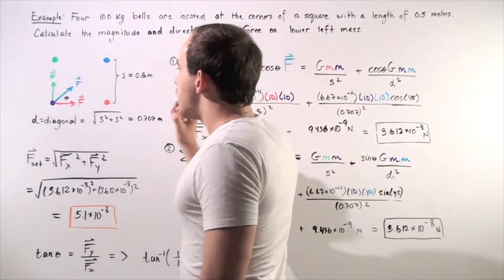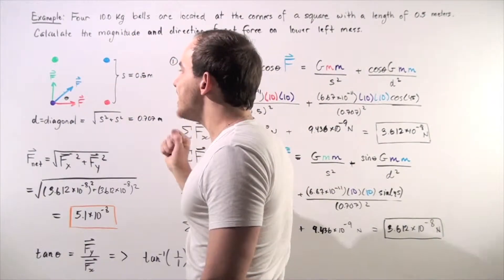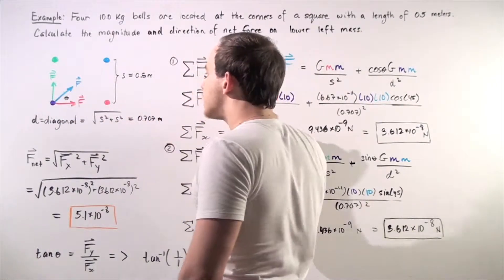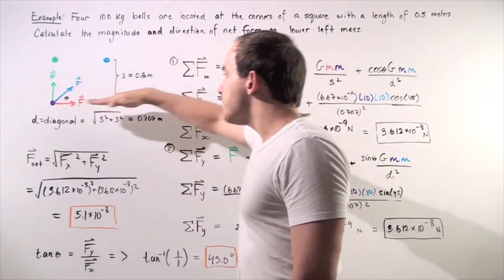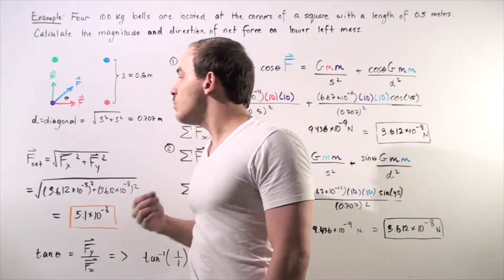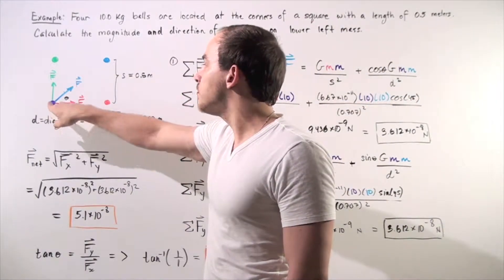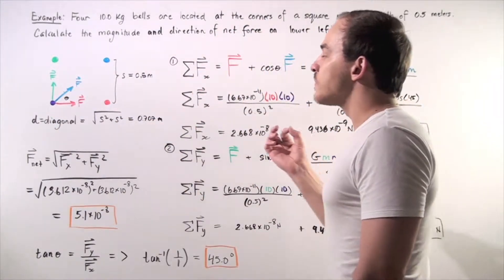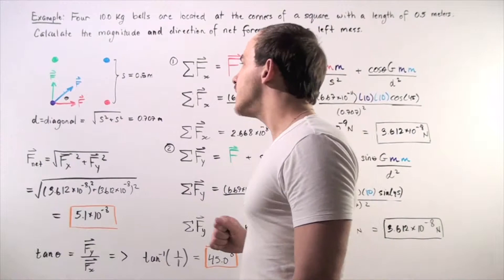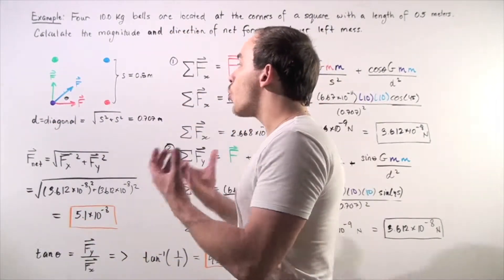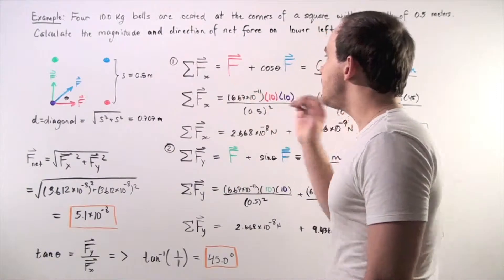Notice that the force on the purple ball created by the blue ball acts at an angle of 45 degrees with respect to the horizontal x-axis, because we're dealing with a square. We choose the rightward direction as the positive x-axis and upward as the positive y-axis. We'll calculate all forces along the x-axis, then along the y-axis, square those values, sum them, and take the square root to find the net force.